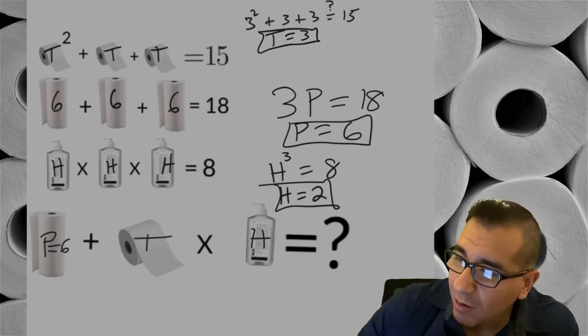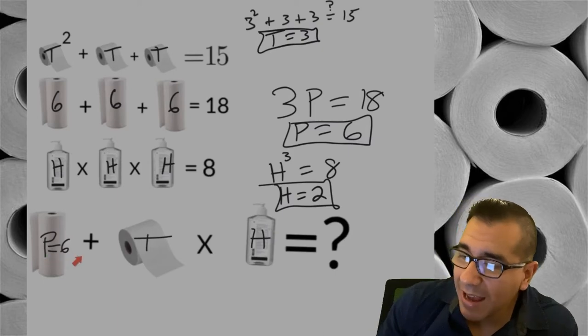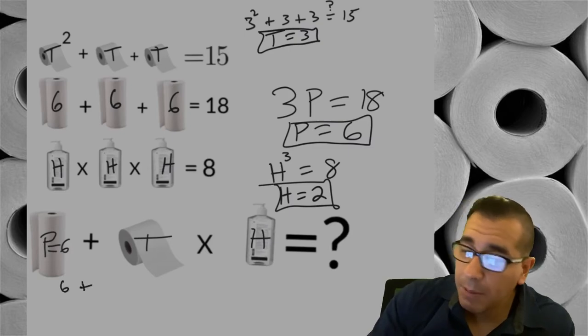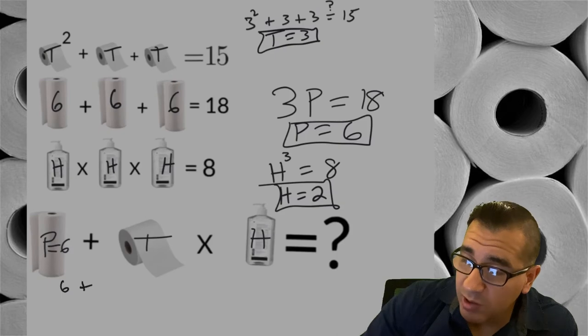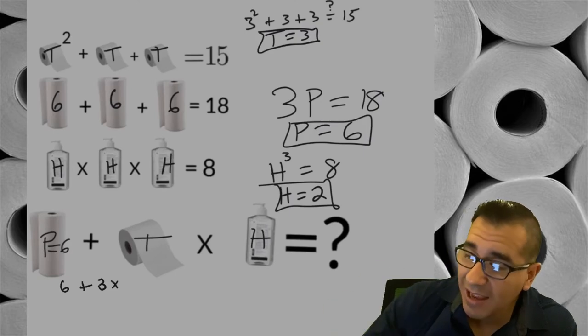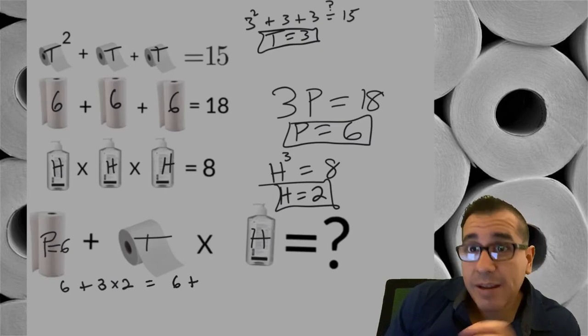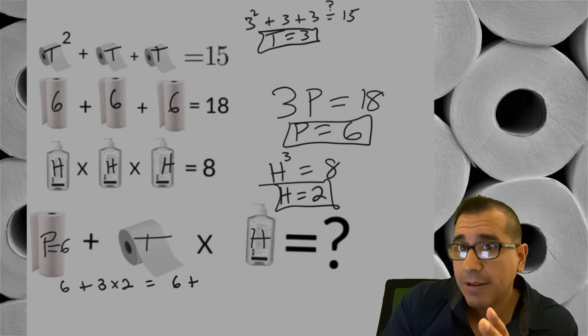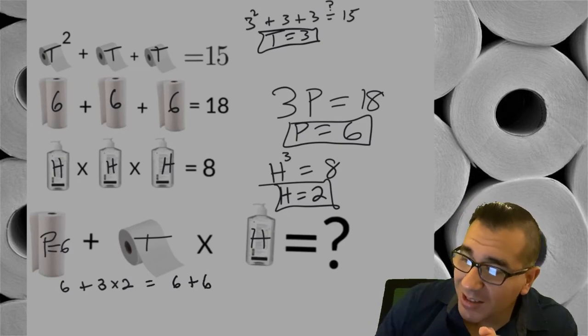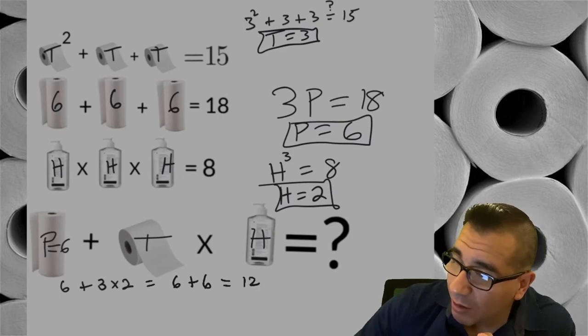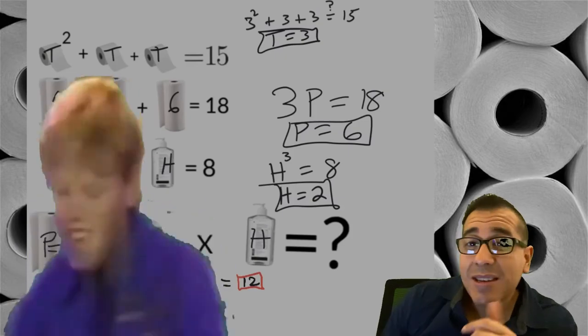So let's go ahead and plug those into our grand finale, our last equation here. Alright, so let's see: we know toilet paper - sorry, paper towels - were six, plus the toilet paper which we just found out one possibility is three, times H, and we know the hand sanitizer is two. So that's six plus three times two, right? You gotta multiply before you add. If you need more help on that I got a video on the order of operations below, check it out. So we end up with six plus six, so grand finale of one of our possible answers - our final possible answer for one of them is 12.